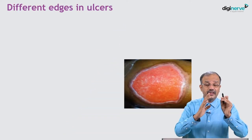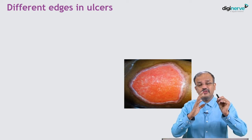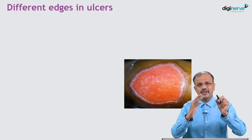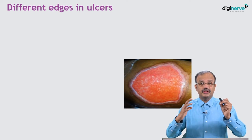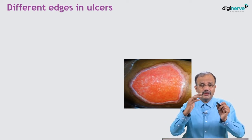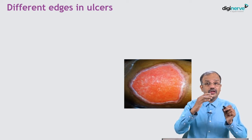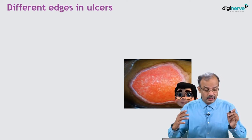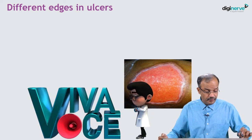Margin has been described - you now have a clear idea. Now, edge is very, very important in an ulcer. Based on the edge, you will be able to give a proper clinical diagnosis, because different types of edges are a feature of different conditions and tell you from which condition the ulcer has developed. What are the different types of edges?